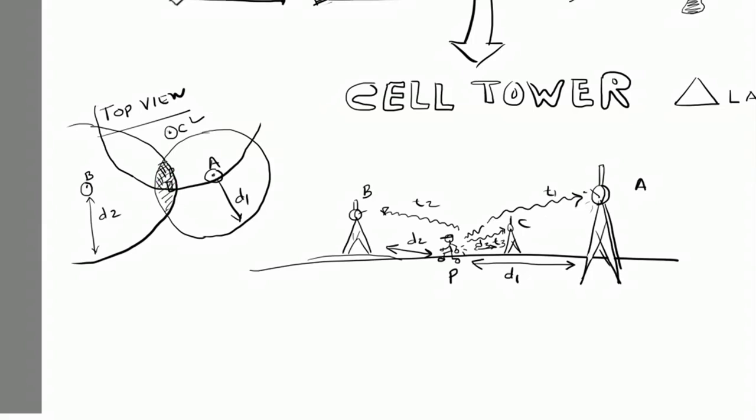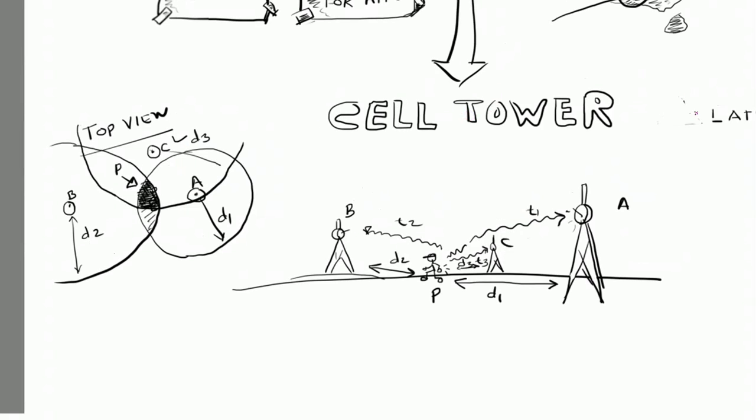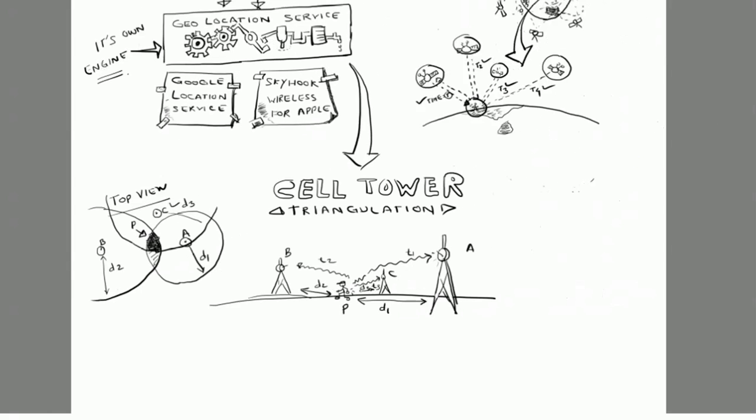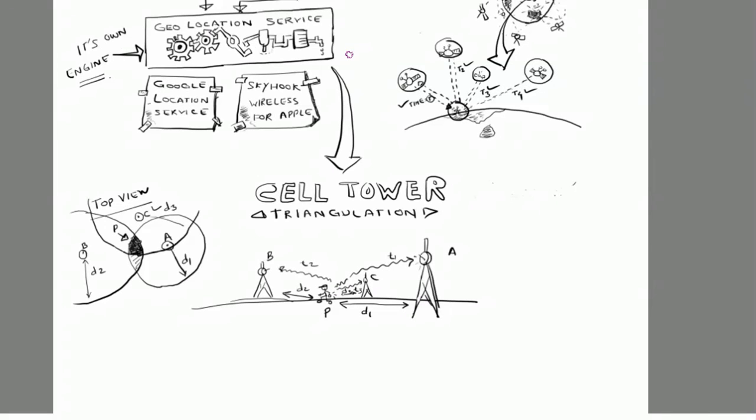At least three towers you need to find some specific accuracy in the results, but even from one cell it will find out your distance but the distance would be in miles so that will not be that much accurate.